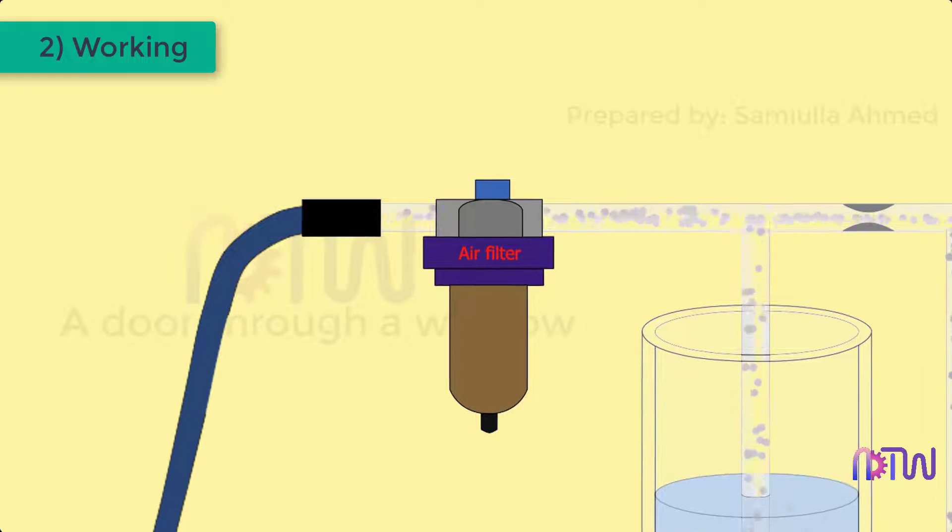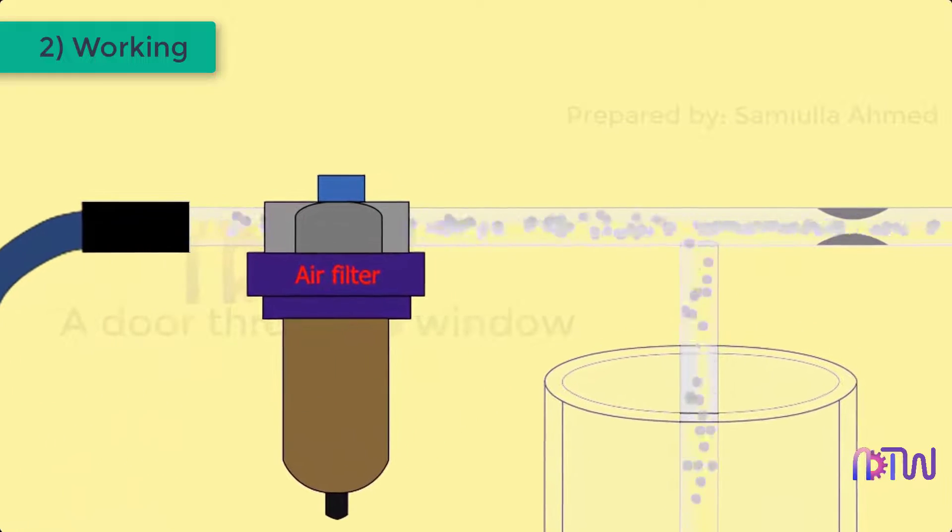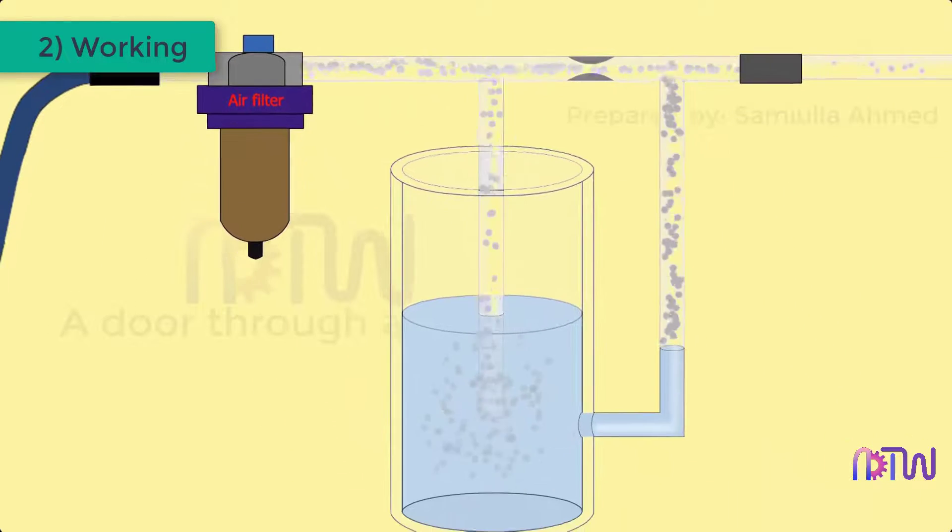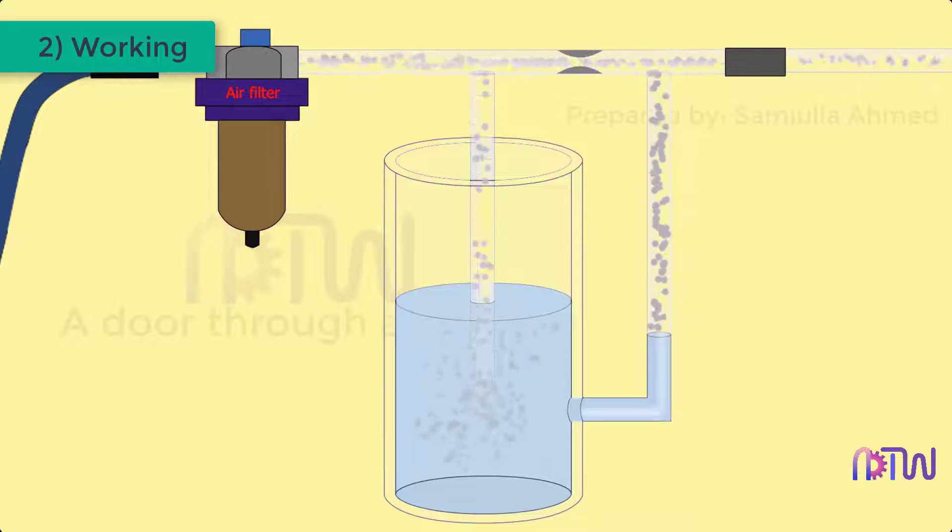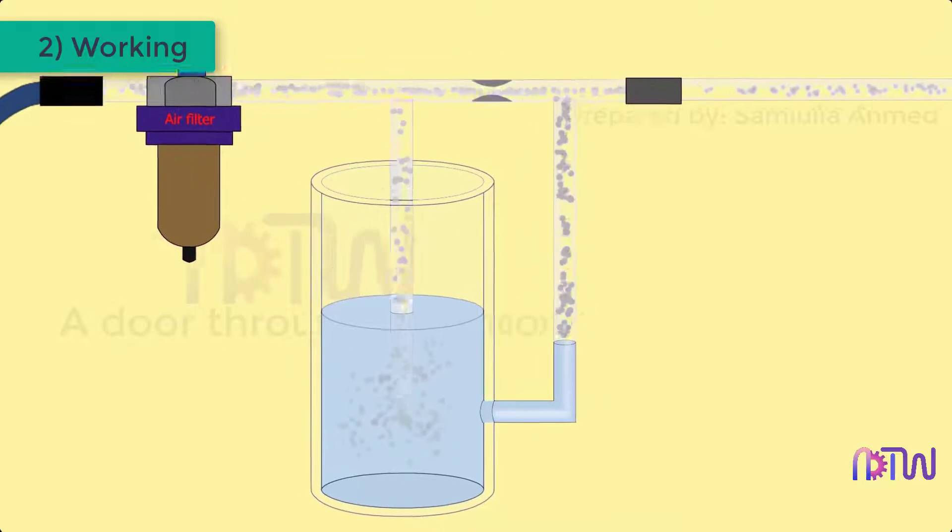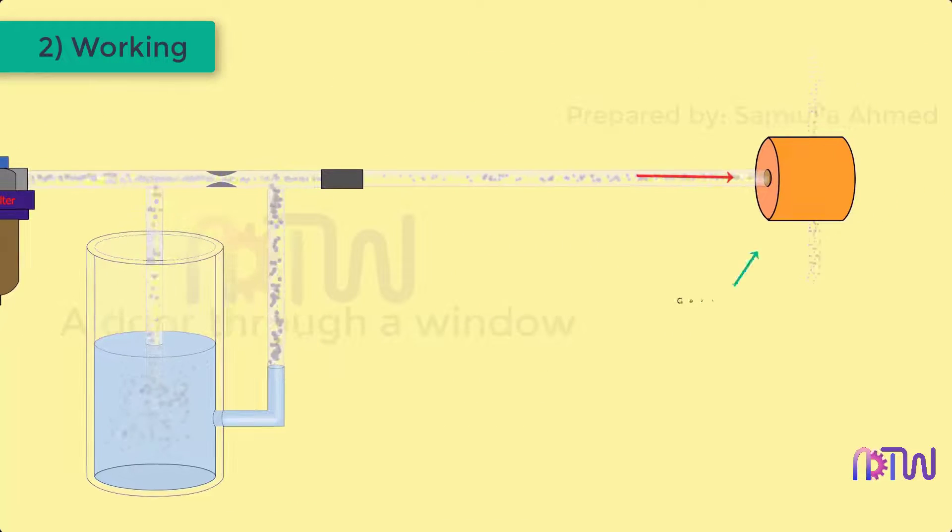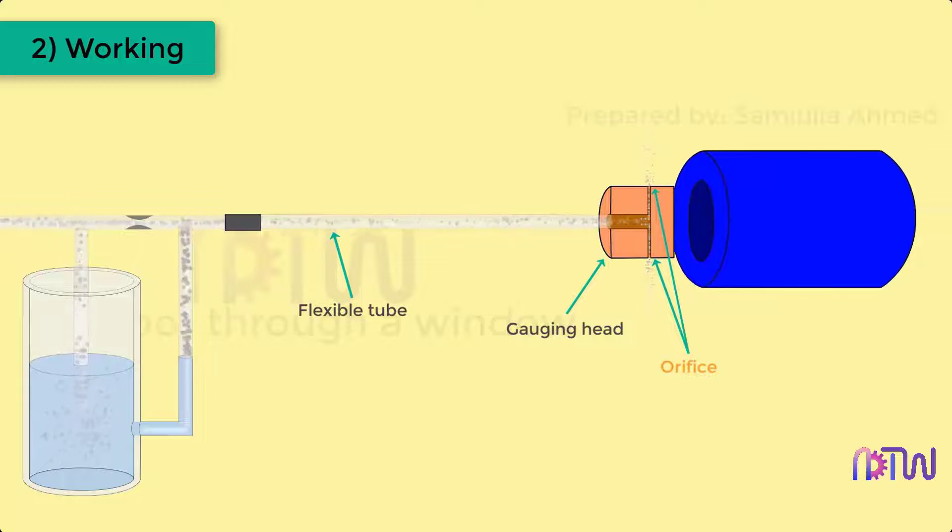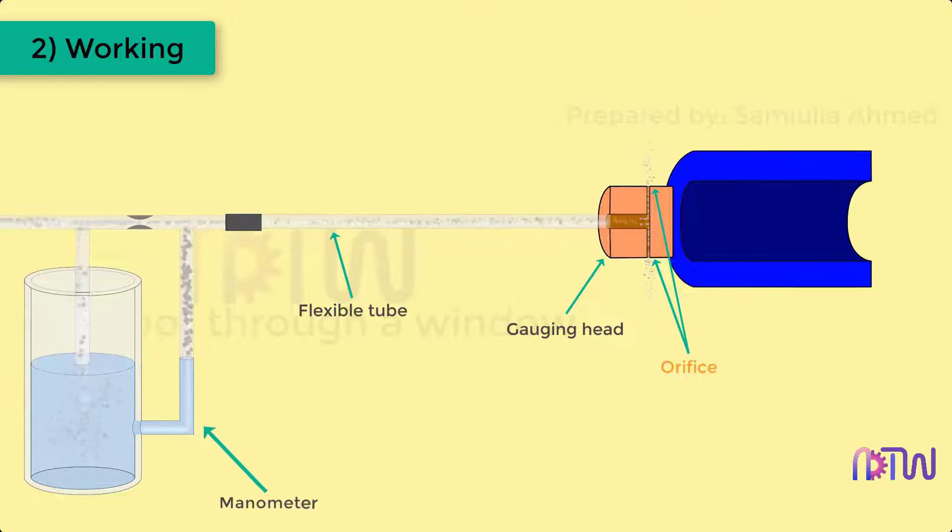After passing from the filter, the air pipe is divided into two ways. Some air goes to the tank and some goes to the restricted jet or orifice. As air enters the water tank, bubbles will be created in the tank and the rest of the air which passes through the orifice reaches the gauging head through a flexible tube. A controlled amount of air passes through the orifice with the required pressure in it.